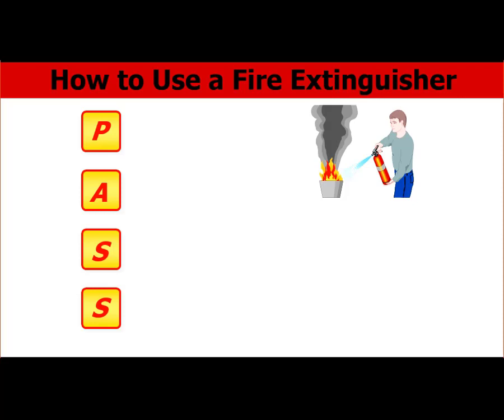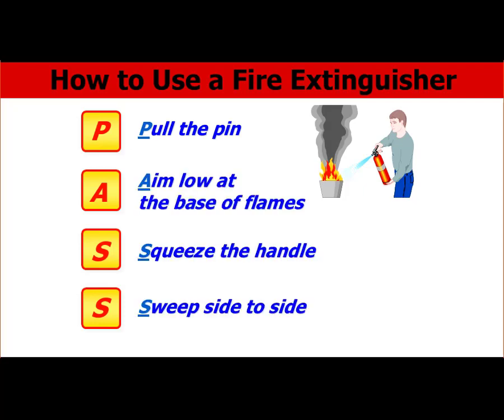How to use a fire extinguisher is usually described by the acronym PASS, which means Pull, Aim, Squeeze, and Sweep. If there is a fire, after pulling the safety pin, aim at the lower base of the flame using the horn of the fire extinguisher. To start spraying the agent, squeeze the handle. For a better result, sweep the horn or hose from side to side — that's called sweeping.